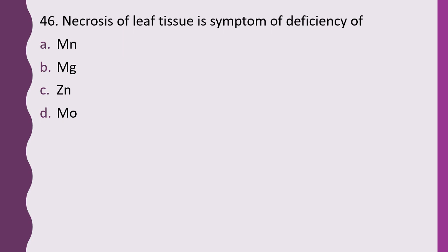Question 46. Necrosis of leaf tissue is the symptom of deficiency of: manganese, magnesium, zinc, or molybdenum. The correct answer is option B — magnesium deficiency causes necrosis of the leaf tissue.